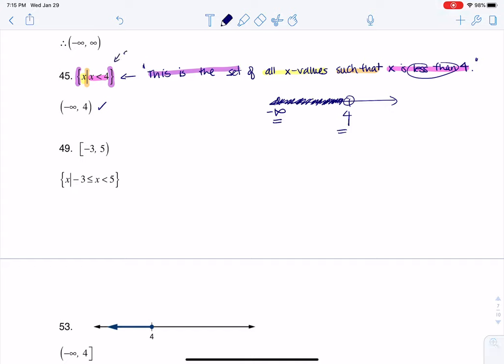So this here is called set notation. And this one here is called interval notation. So there's two different ways of writing up the same thing. And here, this is a graph of an inequality.